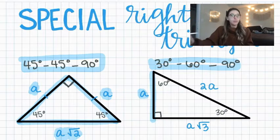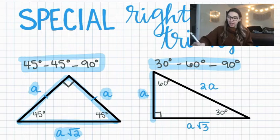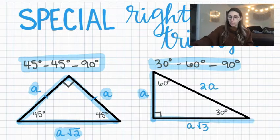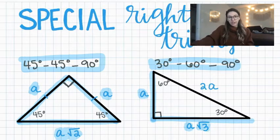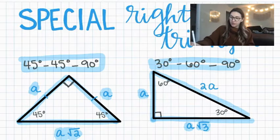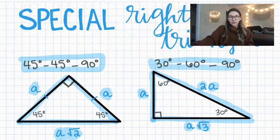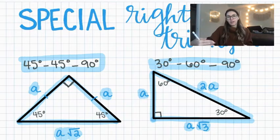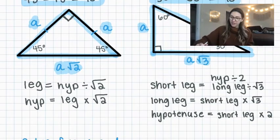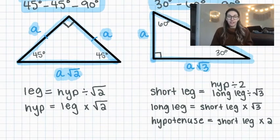We also have the 30-60-90 triangle, where we have one short leg with length 'a.' The longer leg would be 'a' — the short leg — times the square root of three, and the hypotenuse would be 'a' — the shorter leg — times two. So a lot of it depends on knowing the value of another side.